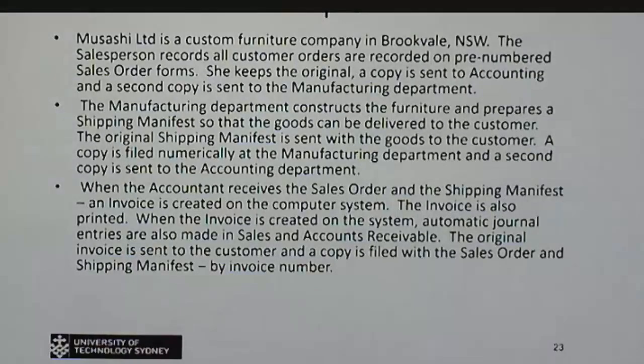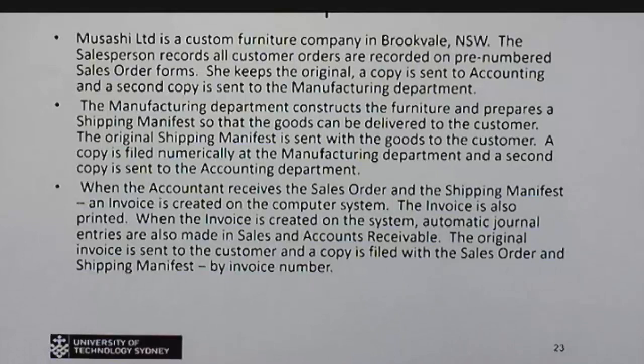So the example we're going to do is this one right here. So we've got a furniture company in Brookdale, New South Wales. The salesperson records all customer orders on a pre-numbered sales form. She keeps a copy and a copy is sent to the accounting department and another copy is sent to manufacturing. Manufacturing makes the furniture and prepares a shipping manifest so goods can be delivered to the customer. The original manifest is sent with the goods to the customer. They file a copy numerically and a second copy goes to the accounting department. When the accounting receives the order and the shipping manifest, they create an invoice on the system. So let's have a go at drawing this flowchart here.